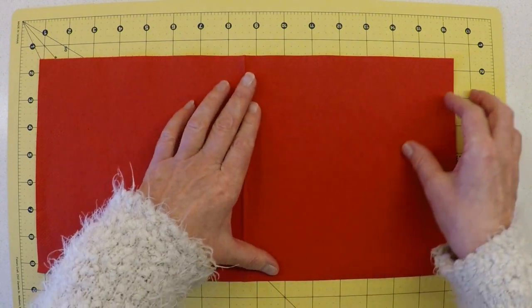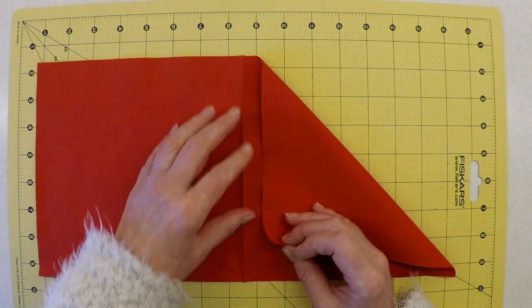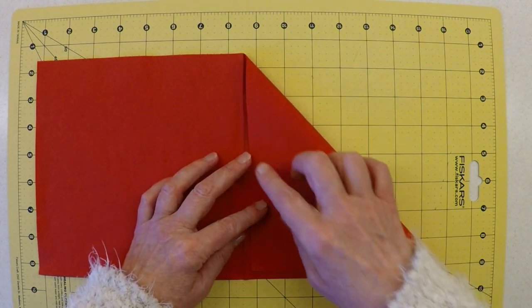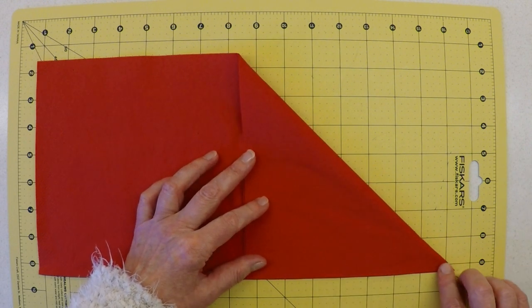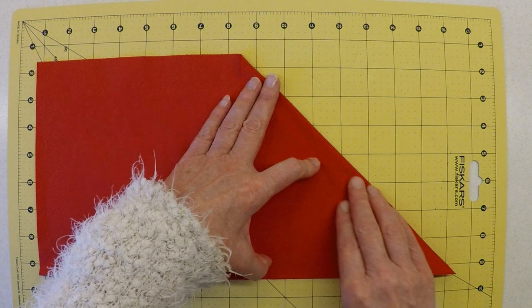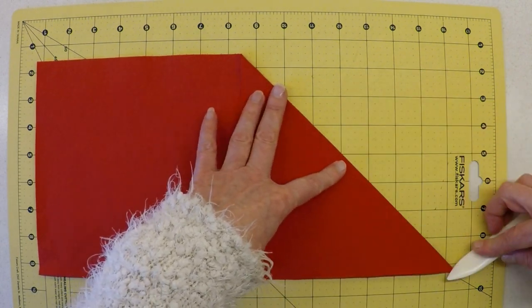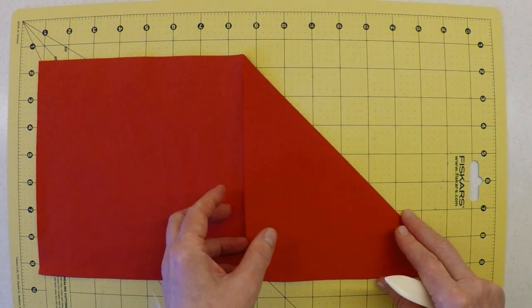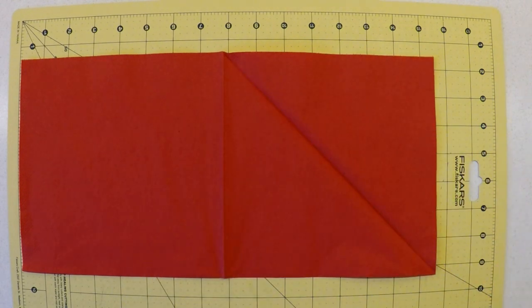The first thing that I'm going to do is to bring this top corner here down to meet this edge here and that tends to come into the central position as well. So we're just creating a diagonal line across there. I'll just use my bone folder to firm up that crease so that's where we're starting and at that point you can open that back out again so you can see that diagonal line.